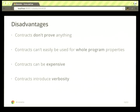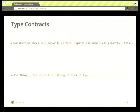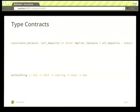A type contract is a contract that looks just like a type signature. Compare an Eiffel contract on a bank account object — which relies on knowing about all_deposits, balance, and a total method, and is quite verbose — to a type contract that looks like a Haskell type signature: this method takes an int, then another int that might be undefined, a method converting strings to foos, and returns bars. It's much cleaner and easier to understand. Type contracts provide information that's more relevant at a glance.